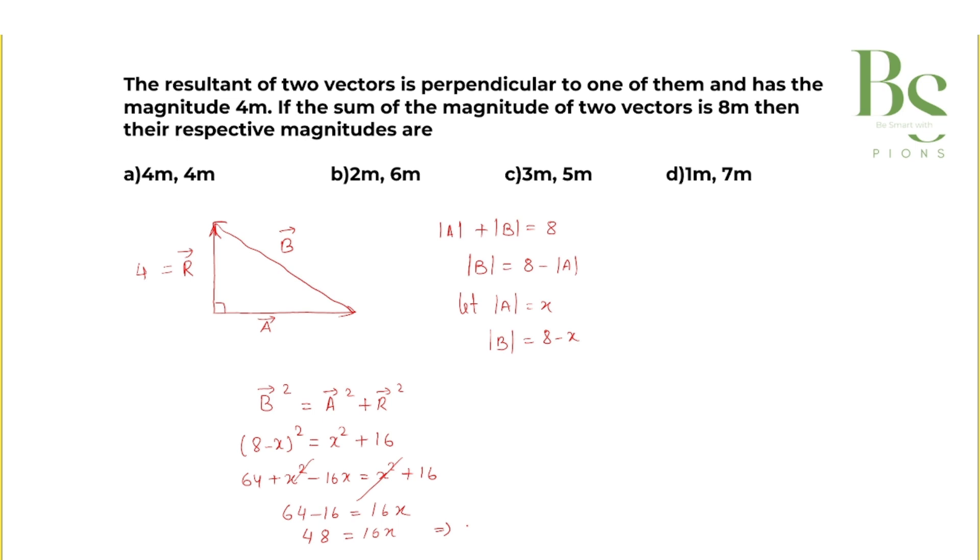If x is 3, then magnitude of A is 3 and magnitude of B is 8 minus 3, which is 5. So 3m and 5m, option C is correct.